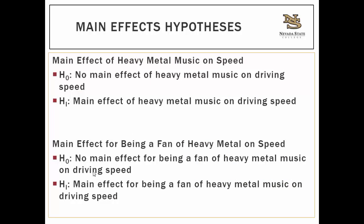For a factorial ANOVA, you're going to have three nulls and three alternatives. You don't need to write these in symbols. Each main effect is the effect of one independent variable at a time. Then the interaction effect is when both independent variables — in this case, being a fan and what music you listen to — interact to have an impact on driving speed.